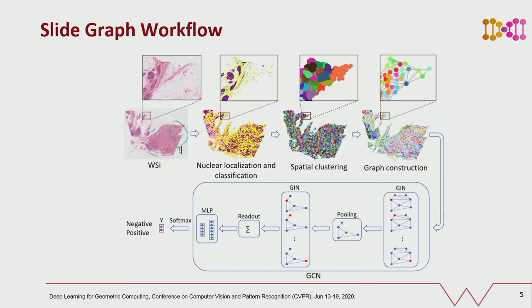This is the workflow of the proposed method. We begin by localizing and classifying individual nuclei in the whole slide image. We then perform spatial clustering of these nuclei and model each cluster as a node in the slide graph. We associate cluster level features with each node based on its nuclear organization. Each node is connected to its neighboring nodes to capture possible tissue signaling mechanisms. The slide graph representation is then used for classification through a graph isomorphic neural network.